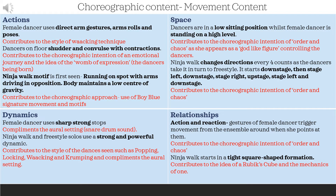Looking at spatial content, we need to be specific. The dancers start in a low sitting position whilst the female is standing at a high level. This could contribute to the choreographic intention of order and chaos, as she appears as a godlike figure controlling the dancers. The ninja walk changes direction every four counts as the dancers take turns to freestyle — starting downstage, then stage left, downstage, stage right, upstage, stage left, and downstage. This specific directional pattern contributes to the intention of order and chaos, as at this moment it's very ordered — almost army-like.